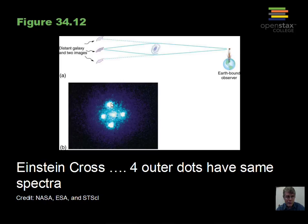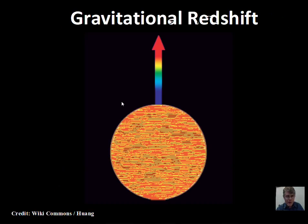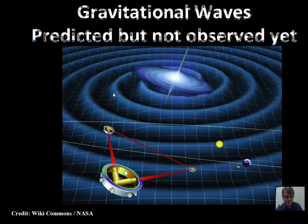Gravitational lensing is being used by astronomers as a powerful technique to see more distant objects, since it gathers the light and makes it brighter than if we were looking at the distant object alone. Another effect predicted by general relativity is gravitational redshift: as light moves away from a very dense object it loses energy and is stretched out, becoming redder than when it was emitted. This is not the Doppler redshift, and it has been observed for very small, dense stars.